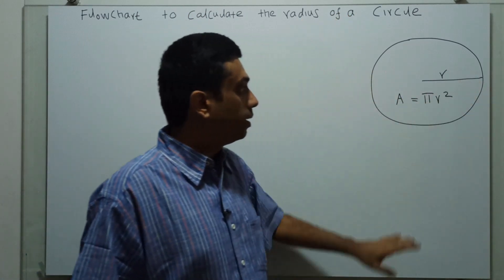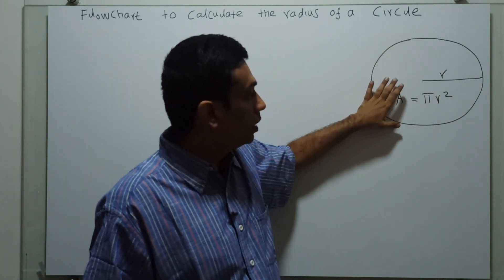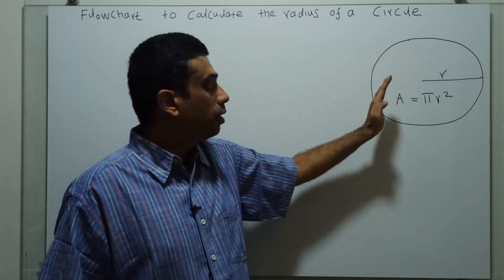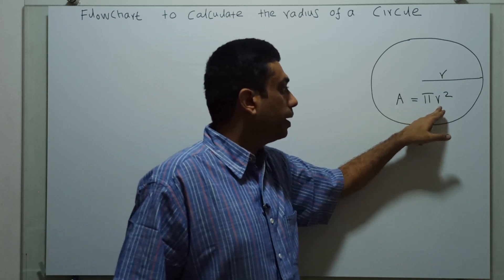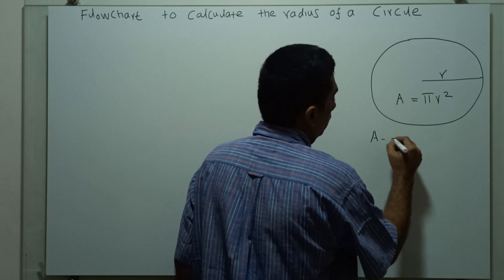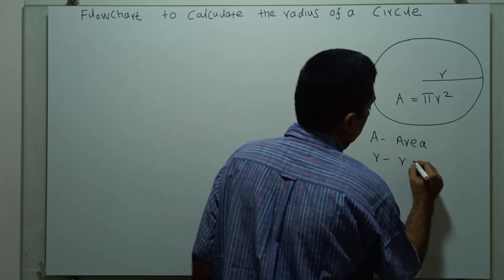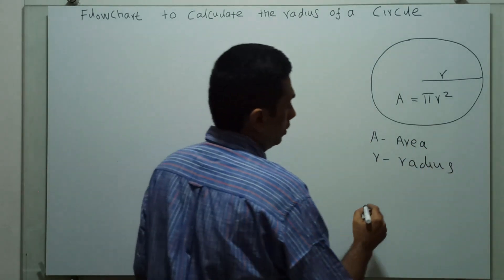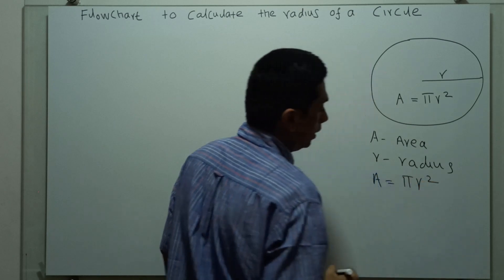So this is the radius. The area of the circle is given here. The area is the space occupied by the circle in the two-dimensional plane. To calculate the area, A equal to pi r square. I am using a variable 'a' for area and 'r' for radius.